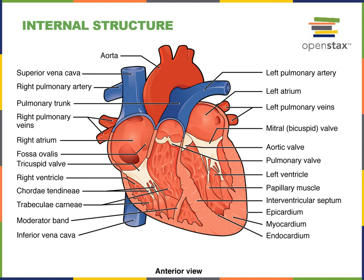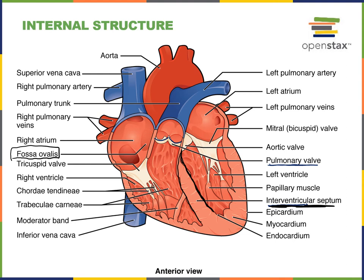In this illustration of the internal structures of the heart we can see the pulmonary semilunar valve, which functions to prevent blood from flowing backwards out of the pulmonary trunk into the right ventricle. Another structure visible here is the interventricular septum — the muscular wall separating the right and left ventricles. We can also see the fossa ovalis, which literally means an oval-shaped depression in the surface of the right atrium.